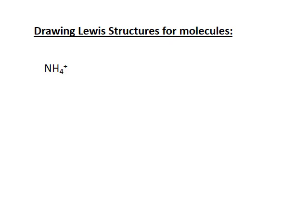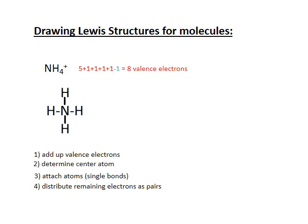For a positively charged ion, consider ammonium (NH₄⁺). With a positive charge, one electron is removed — just as a sodium cation loses an electron to resemble a noble gas. Nitrogen has five valence electrons, each hydrogen has one, and we subtract one for the positive charge, giving eight valence electrons total. Nitrogen goes at the center as a second-period element larger than hydrogen. Distributing the electrons, all four hydrogens are attached using four single bonds, consuming all eight electrons.